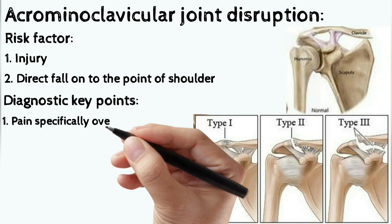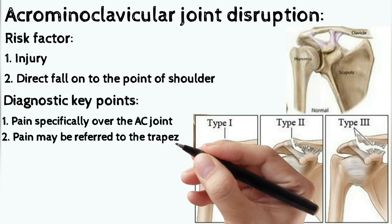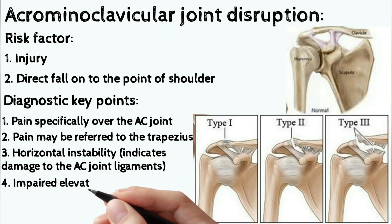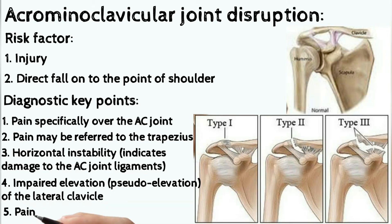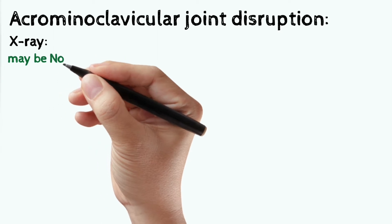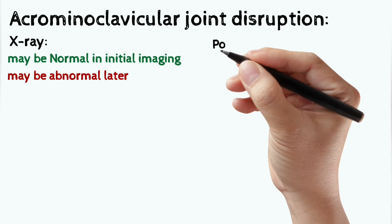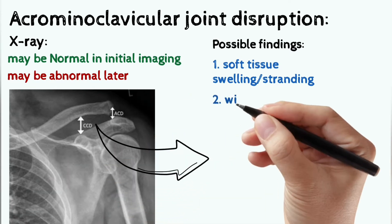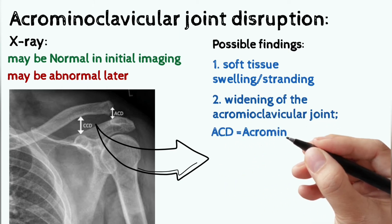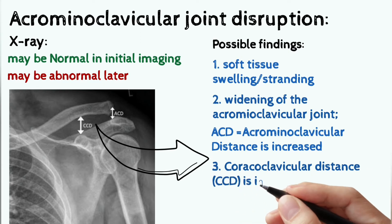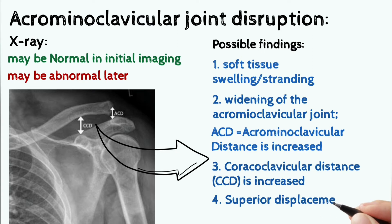Diagnostic key points are pain specifically over the AC joint, which may be referred to the trapezius. Horizontal instability indicates damage of the AC joint ligaments. Impaired elevation or pseudo-elevation of the lateral clavicle, and pain is worse in abduction. On x-ray, imaging may be normal initially but later may be abnormal with soft tissue swelling. We can see widening of the acromioclavicular joint; ACD (acromioclavicular distance) is increased, and CCD (coracoclavicular distance) is also increased, due to superior displacement of the distal clavicle.